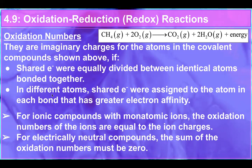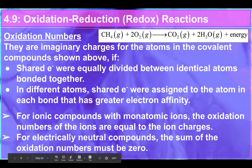If we have different atoms, we need to assign the shared electrons to the one with greater electron affinity. So we have to decide whether that is the carbon or the hydrogen, and then whether it is the carbon or oxygen, and whether it is hydrogen or oxygen. Anytime we have an ionic compound with a monatomic ion, the oxidation number is just the charge of that ion. Anytime we have an electrically neutral compound, the oxidation numbers must add up to zero — otherwise it would be charged.